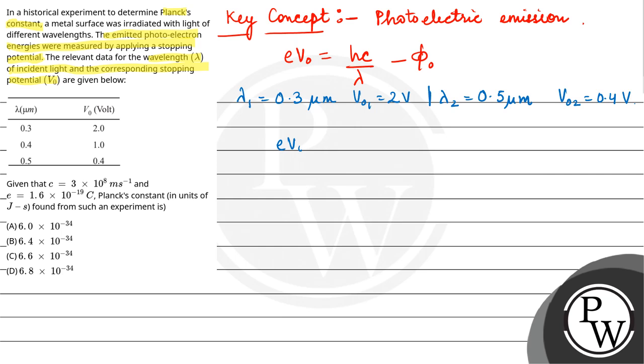You have to use the relation: eV₀ equals hc/λ minus φ₀. First we'll do it for λ₁ and V₀₁. So 2e equals hc/(0.3×10⁻⁶) minus φ₀. This is our equation 1.